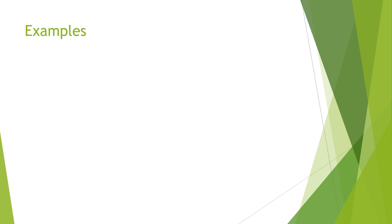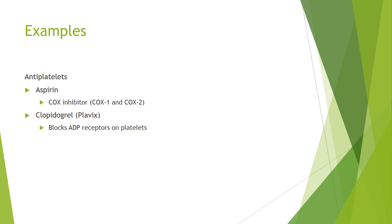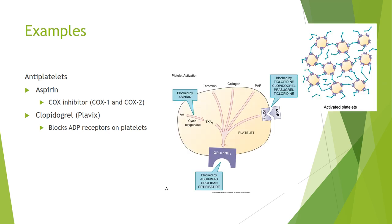Now let's look at examples of antiplatelet drugs. Here we have aspirin and clopidogrel, or Plavix. These drugs inhibit the platelet's ability to stick together. Aspirin achieves this by inhibiting COX-1 — keep in mind it also inhibits COX-2, but it gets its antiplatelet action from COX-1 inhibition. Plavix does this by blocking specific sticky receptors on the platelet called ADP receptors.